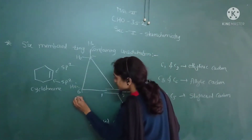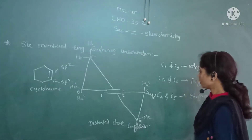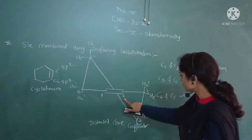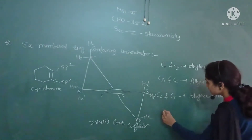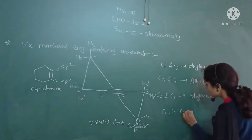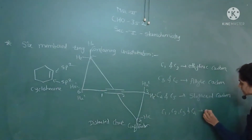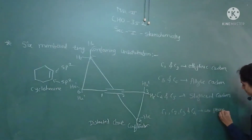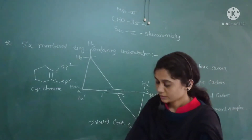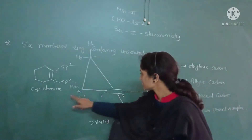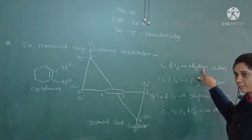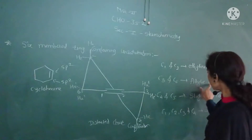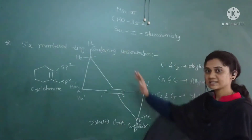C1, C2, C3, and C6 are all four carbons lying in one plane. To summarize the distorted chair conformation of cyclohexene: C1 and C2 are ethylenic carbons, C3 and C6 are allylic carbons, and C4 and C5 are staggered to each other, bearing normally axial and equatorial hydrogens.